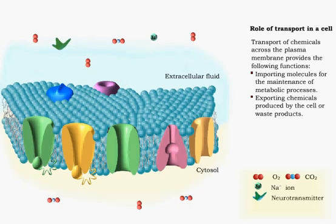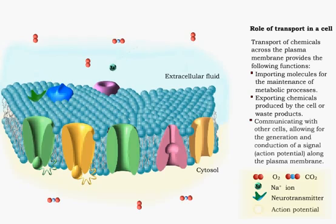Communication occurs between cells when substances produced by one cell, such as neurotransmitters, induce the transport of chemicals across the plasma membrane of another cell, making the generation of an action potential possible.